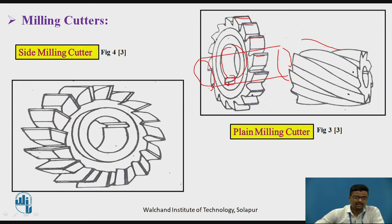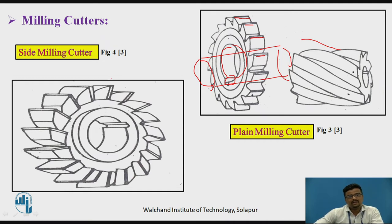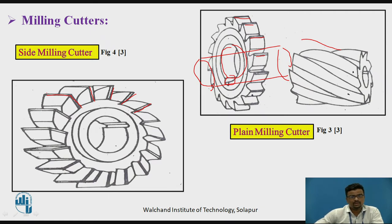After that, there is the side milling cutter. Suppose you want to perform both facing operation and side milling. In the side milling cutter, cutting teeth are at the periphery as well as on the sideways. This means cutting operations can be performed on both the side and the face, which is the advantage of the side milling cutter.